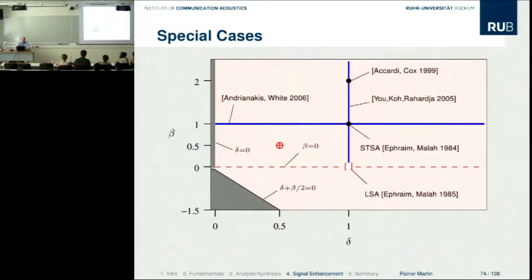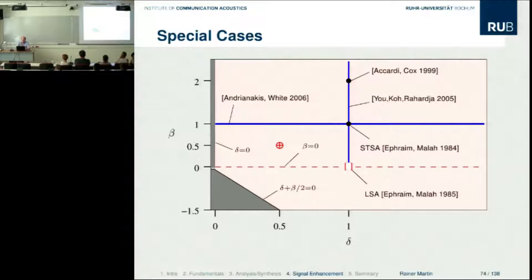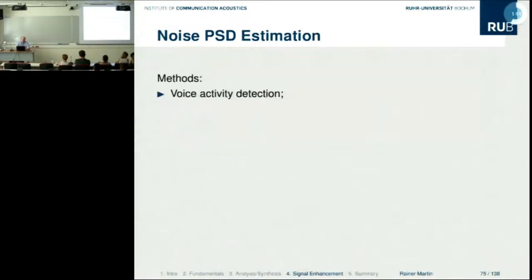Regarding listening tests and measures — I don't present many objective measurements in this talk, but I want to emphasize clearly: in the end, listening is the one measure. There is no way around listening experiments and listening tests. It is really important to listen to your processed results and be very critical about the target quality, the background quality, and possible artifacts.